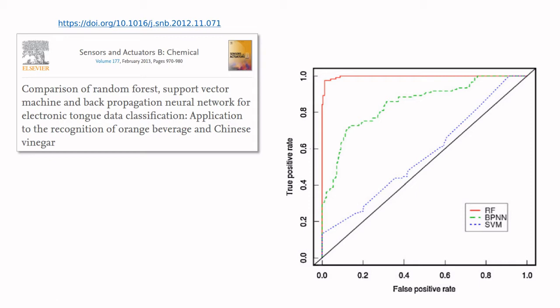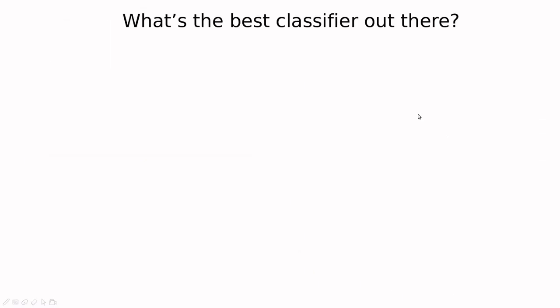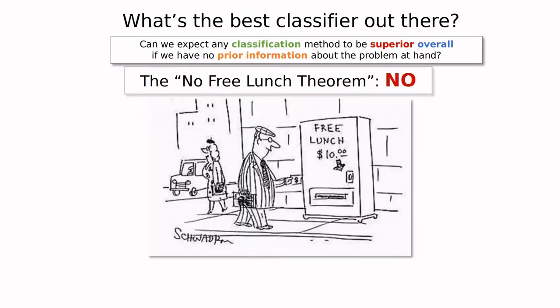So what's the conclusion here? Basically, this means that for some problems you can distinguish which one is the best, but for some other problems you cannot tell overall. So what's the best classifier out there? This is a very prosaic way to ask this more specific question: Can we expect any classification method to be superior overall if we have no prior information about the problem at hand? And the answer is, as economists would say, no, there is no free lunch.